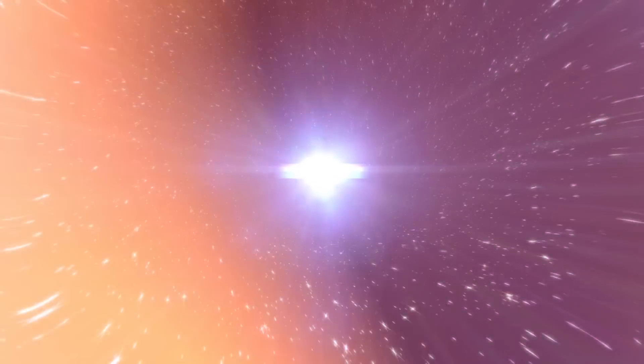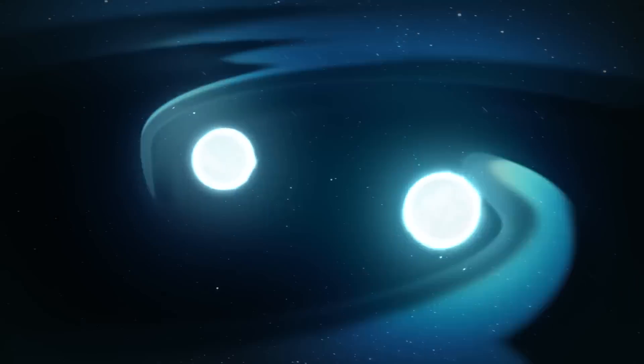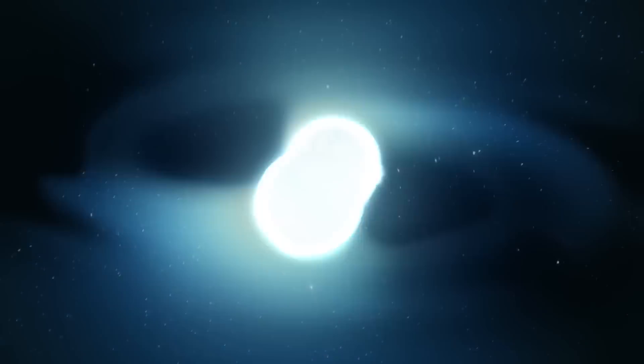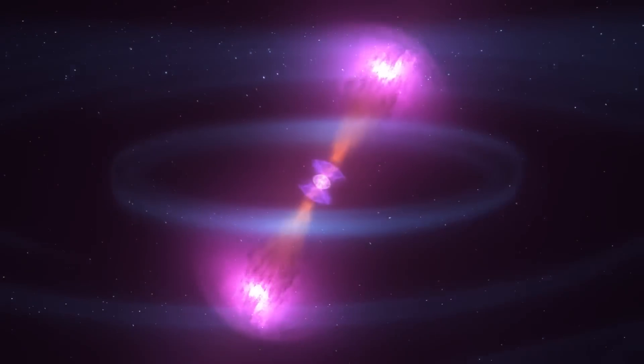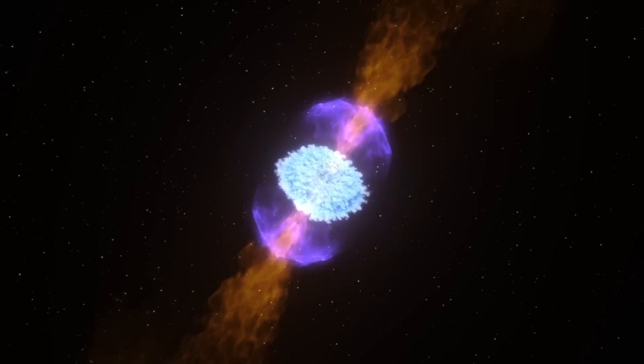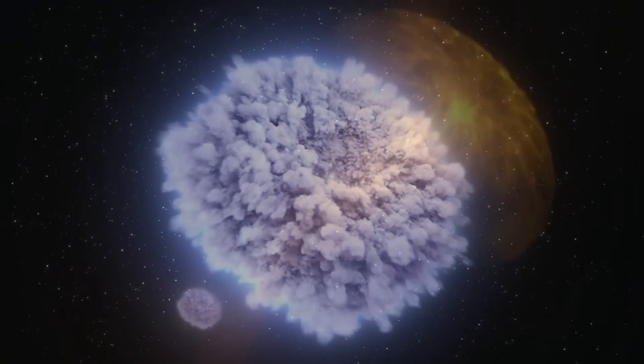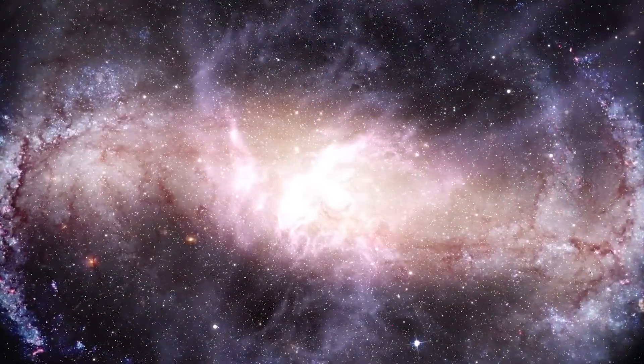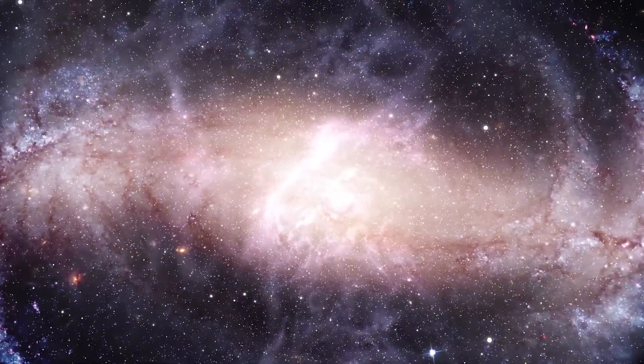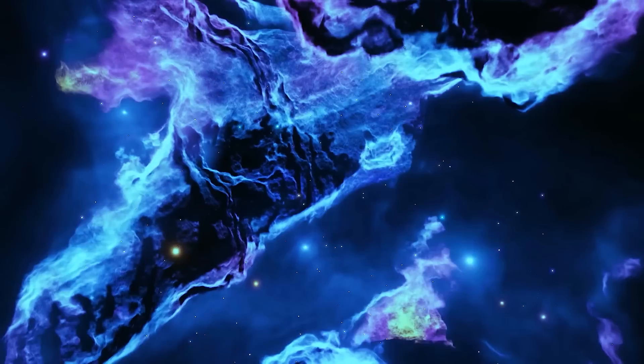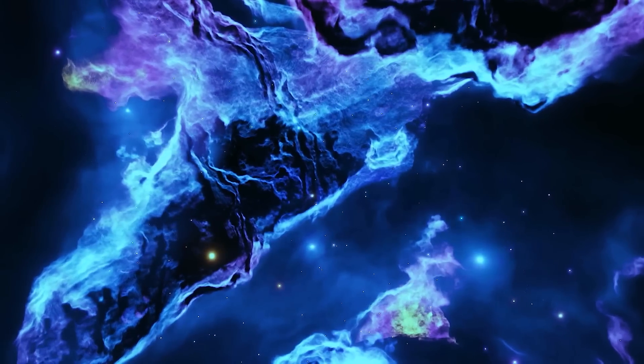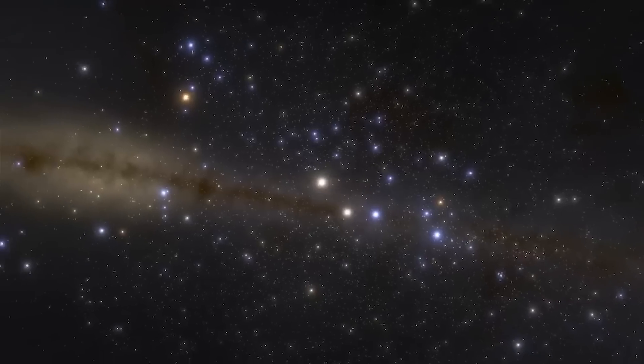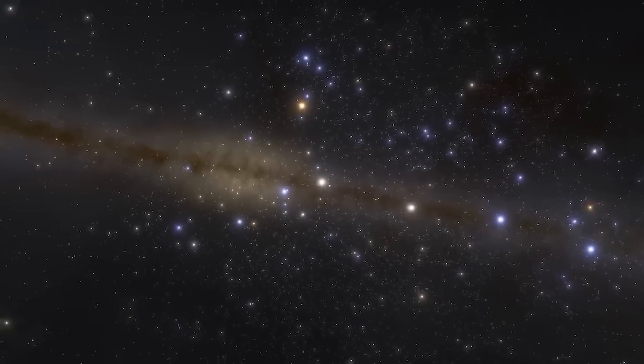Type 2 supernovas happen when a star with a lot of mass runs out of fuel and can't make the nuclear processes that keep it together. In response, the star collapses in on itself, and then explodes in a huge way. Very large amounts of energy are released as light, heat, and radiation when a supernova happens. Everything in its path is swept away. It is possible for the explosion to be so bright that it shines brighter than the whole galaxy the star is in, but this brightness will only last for a short time. The supernova will eventually go away, generally in a few weeks or at most a few months.